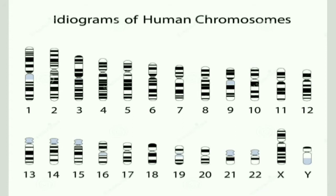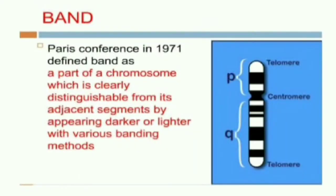This technique is important because through chromosome banding we can identify abnormalities such as chromosome breakage, loss, duplication, and translocations. A band is a part of a chromosome that can be clearly distinguished from its adjacent segments by the presence of dark or light coloring with various banding methods. Such a part of a chromosome is known as one band.